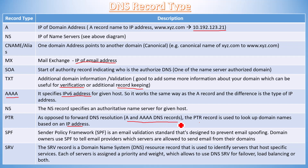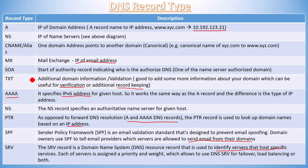SPF (Sender Policy Framework) is an email validation standard designed to prevent email spoofing. Domain owners use SPF to tell email providers which servers are allowed to send email from their domain. SRV is a record type in the Domain Name System used to identify the server that hosts specific services. Each SRV record is assigned a priority and weight, allowing DNS SRV to be used for failover, load balancing, or both. Basic knowledge of these record types is good enough for passing the exam when questions come related to Route 53.